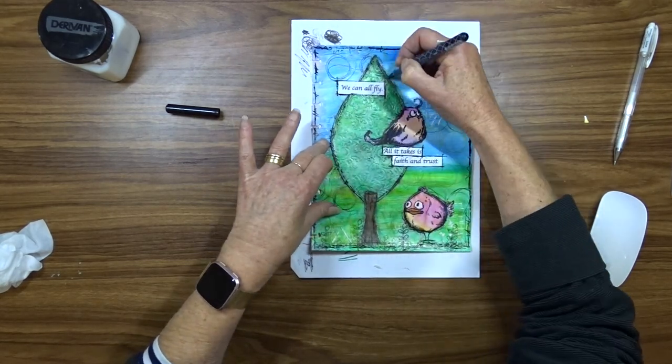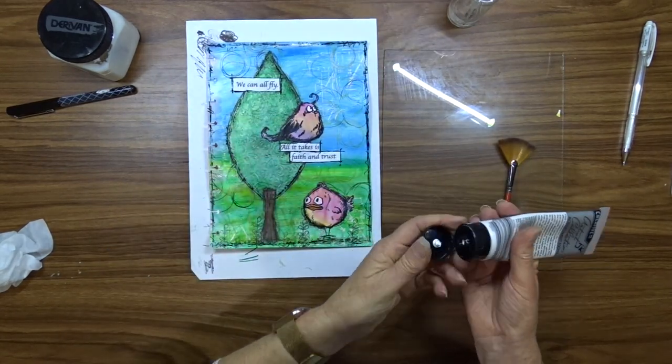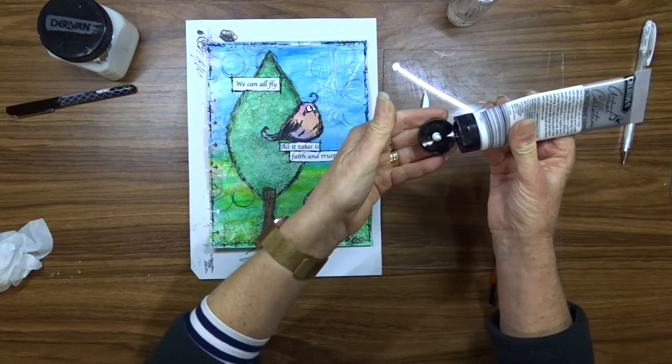I also decide that I want a bit more white because the original white splatters that I put on there seem to have faded away to nothing, so I get out my white acrylic paint once again.